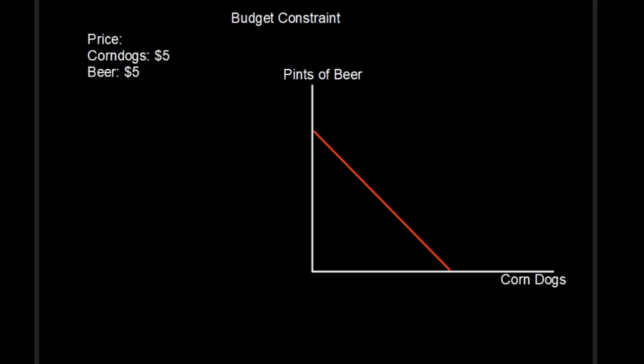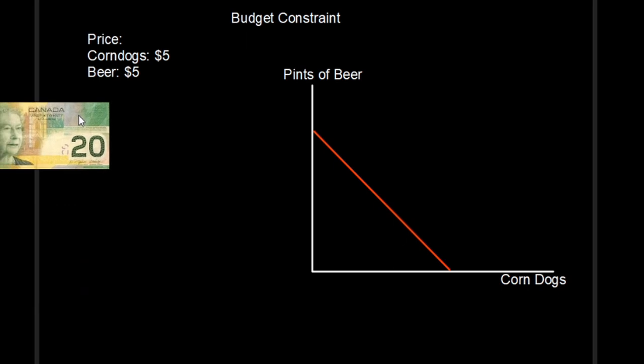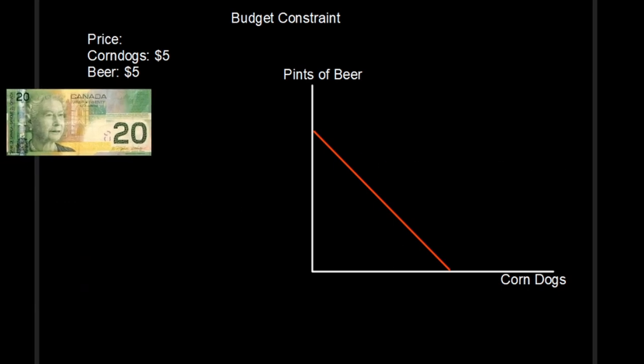For the budget line, let's say we're at some kind of fair or festival — the annual Saanich fair. We're going to presume that you have $20, and before you are corn dogs and beer, both going for five bucks each. Given this scarce resource of $20, we have a choice between pints of beer or corn dogs. So how do we allocate this scarce resource between the two?